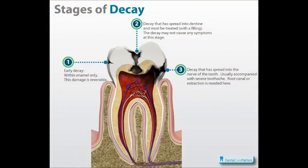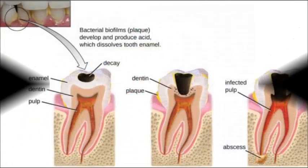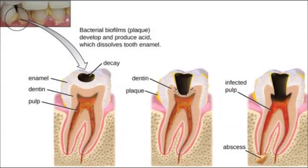The stages of tooth decay are as follows. The first stage is the white spot, where caries begins with a chalky white area due to loss of calcium and buildup of plaque. Next is enamel decay, in which the enamel starts breaking underneath the tooth surface. Then dentine decay: if the tooth is left untreated, decay moves into the dentine. After that, involvement of the pulp occurs, where the pulp is infected with bacteria. Abscess formation is the final stage of tooth decay, and if still untreated, tooth loss occurs.